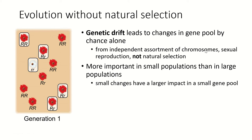First, because of independent assortment of chromosomes, which happens in meiosis when homologous pairs of chromosomes distribute to different cells, and which chromosome goes to which cell is chance. Also, sexual reproduction itself — it's largely by chance which sperm fertilizes which egg. So which genes get passed on is largely a result of chance.